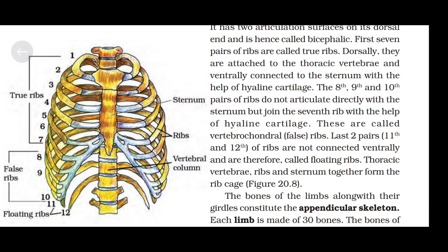The last two pairs — the 11th and 12th ribs — are not connected ventrally and are therefore called floating ribs. Thoracic vertebrae, ribs, and sternum together form the rib cage.